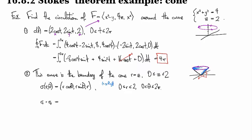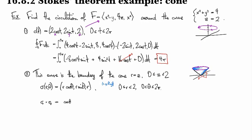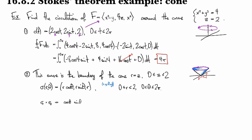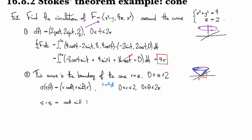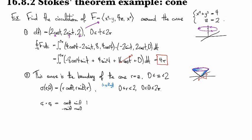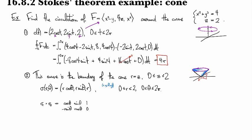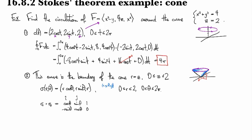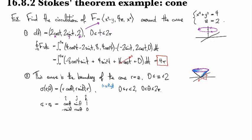That's going to be, let's see. So I take the partial with respect to R and get cosine Theta sine Theta one. And then the partial with respect to Theta and get -R sine Theta, R cosine Theta zero.